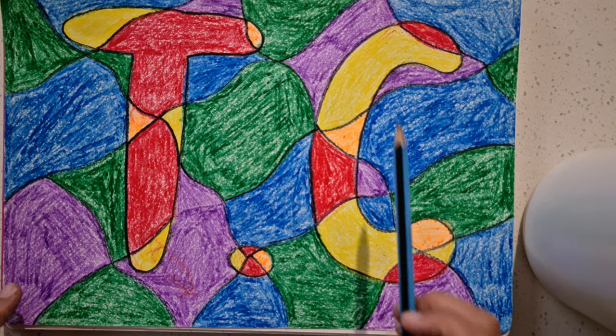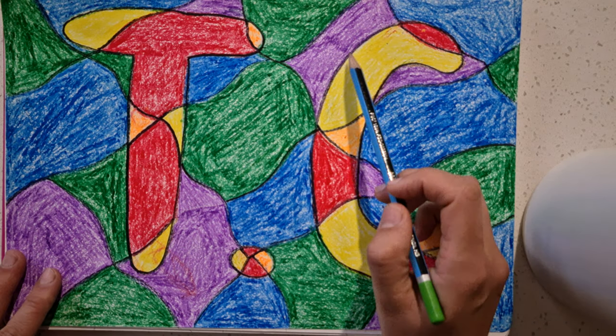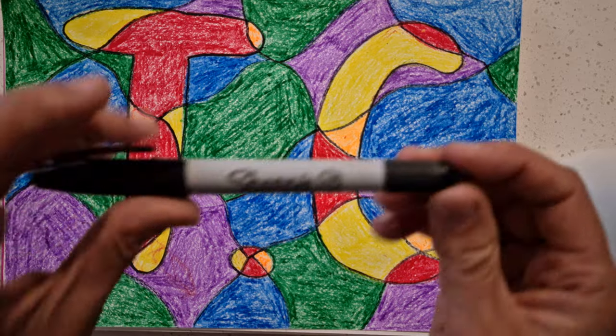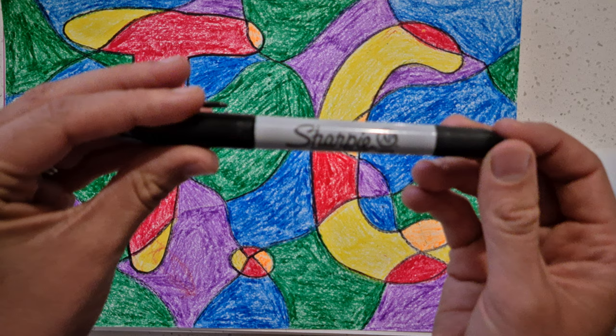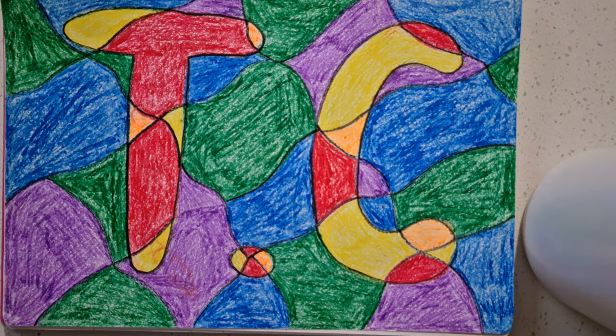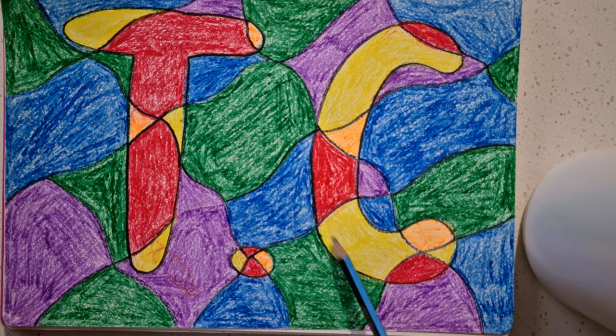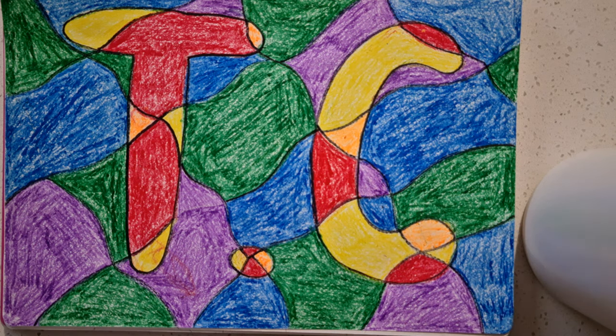You can also see that once I finished coloring everything in I've gone over my lines with the sharpie or the marker. That's why I said you need to try and have a marker for this task because it just finishes off your artwork. It defines the difference in the shapes and defines the initials from the background a little bit further.